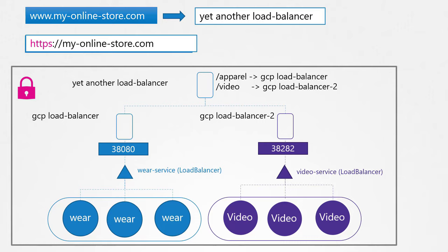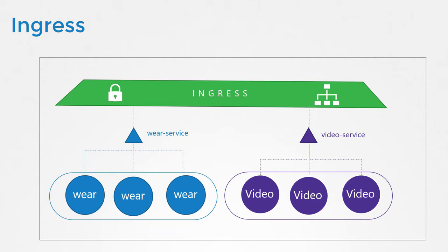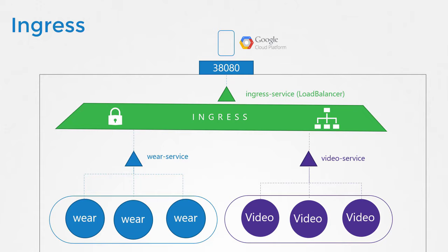That's where Ingress comes in. Ingress helps your users access your application using a single externally accessible URL that you can configure to route traffic to different services within your cluster based on the URL path, while also implementing SSL security. Think of Ingress as a layer 7 load balancer built into the Kubernetes cluster that can be configured using native Kubernetes primitives, just like any other object. Even with Ingress, you still need to expose it outside the cluster — either as a NodePort or with a cloud native load balancer — but that is just a one-time configuration. Going forward, you perform all load balancing, auth, SSL, and URL-based routing configurations on the Ingress controller.